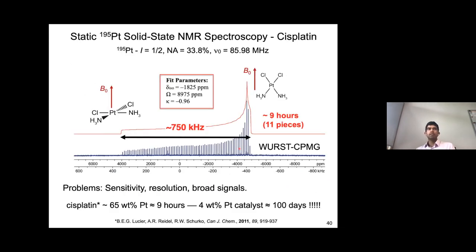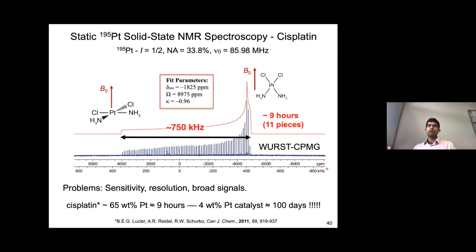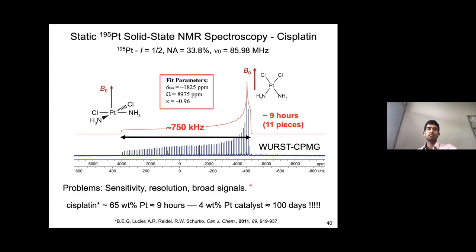There are also experiments from Rob Schurko's group using adiabatic CP steps in collaboration with Lucie Ouellette, which can also accelerate these experiments — but still requiring frequency-stepped acquisition in many cases, as with cisplatin where the platinum pattern is about 750 kHz across, acquired in about 11 pieces by frequency stepping with CPMG, taking about nine hours. With the platinum weight percent in cisplatin at about 65%, the overall sensitivity is still quite poor; if we are interested in samples where metal concentration is quite low, such as catalysts at a few percent or sub-1% weight loading, these methods become quickly impossible to do.